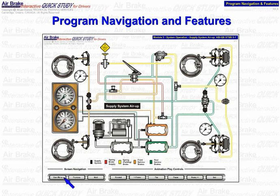The main menu button will return you directly to the main menu from anywhere in the program. The previous button will take you to the screen immediately before the screen you are viewing. And the next button, of course, will take you to the screen immediately following the screen you are presently viewing.